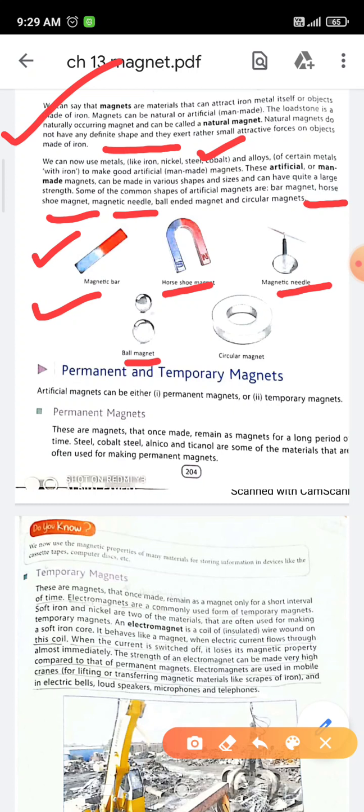Students, magnets are two types: permanent magnet and temporary magnet. Permanent magnets are the magnets that once made remain as magnets for a long period of time. Those magnets which are made once remain magnets for a long time are called permanent magnets.